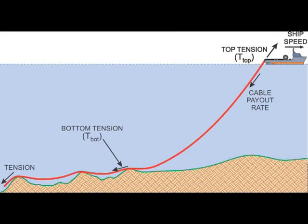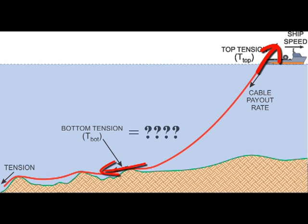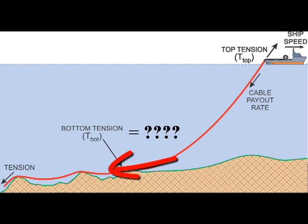Cable installers typically use top tension to approximate the bottom tension, but in deeper waters the length of cable being suspended becomes larger, top tension becomes huge, and this approximation for bottom tension becomes inaccurate. Because installers do not have the means to accurately estimate the cable tension on the bottom, they typically overcompensate by installing cables with excessive tension on the seafloor, causing the previously mentioned problems.